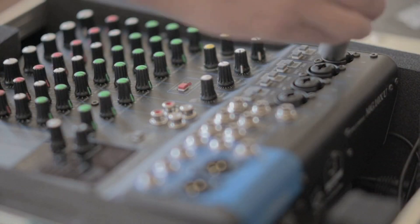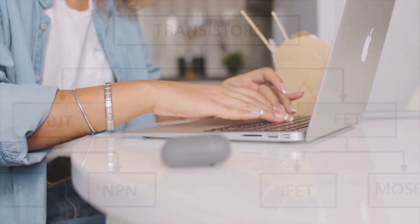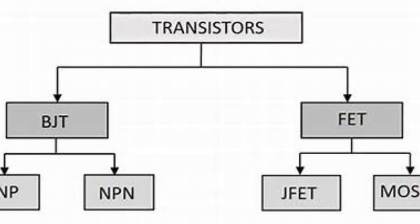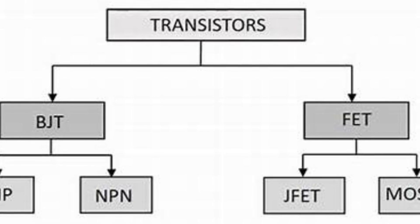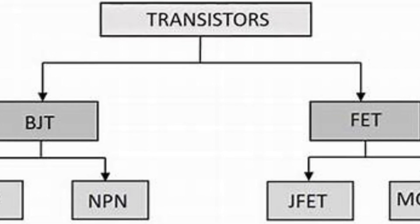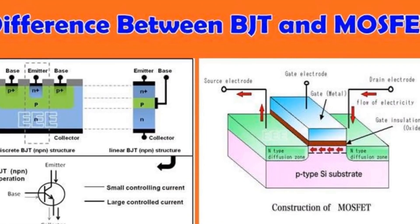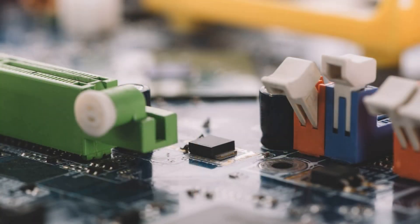FETs are just as essential as BJTs in the grand scheme of things. They're often used in amplifiers and switching devices, making them an integral part of our everyday electronics. In essence, these two types of transistors, though different in their working mechanisms, work hand-in-hand to control the flow of electrical current in a circuit. Their differences are what make them perfect for different applications, adding diversity to the world of electronics.